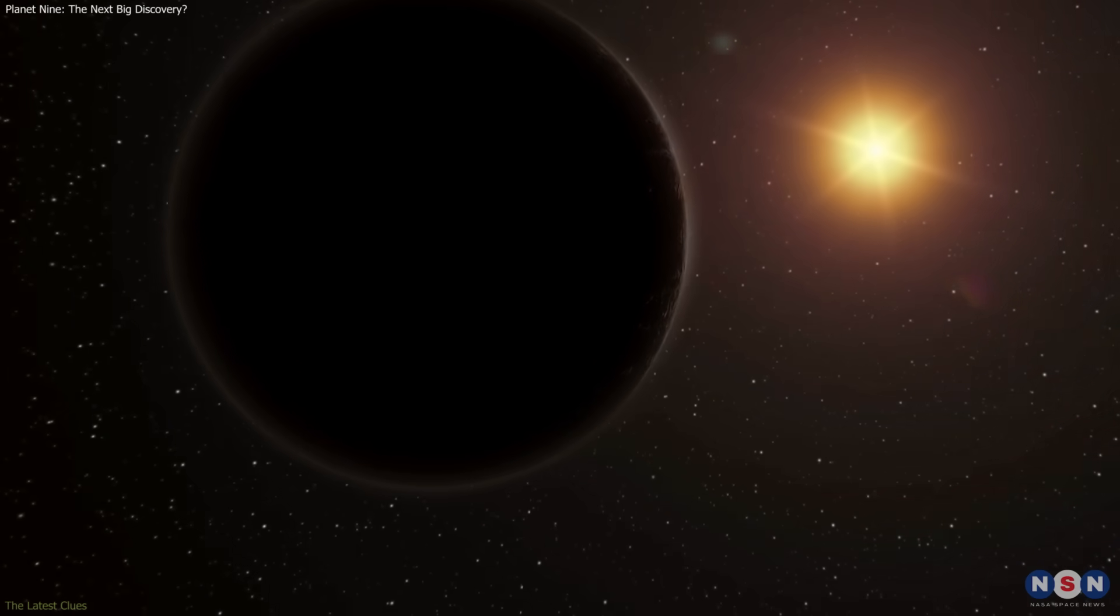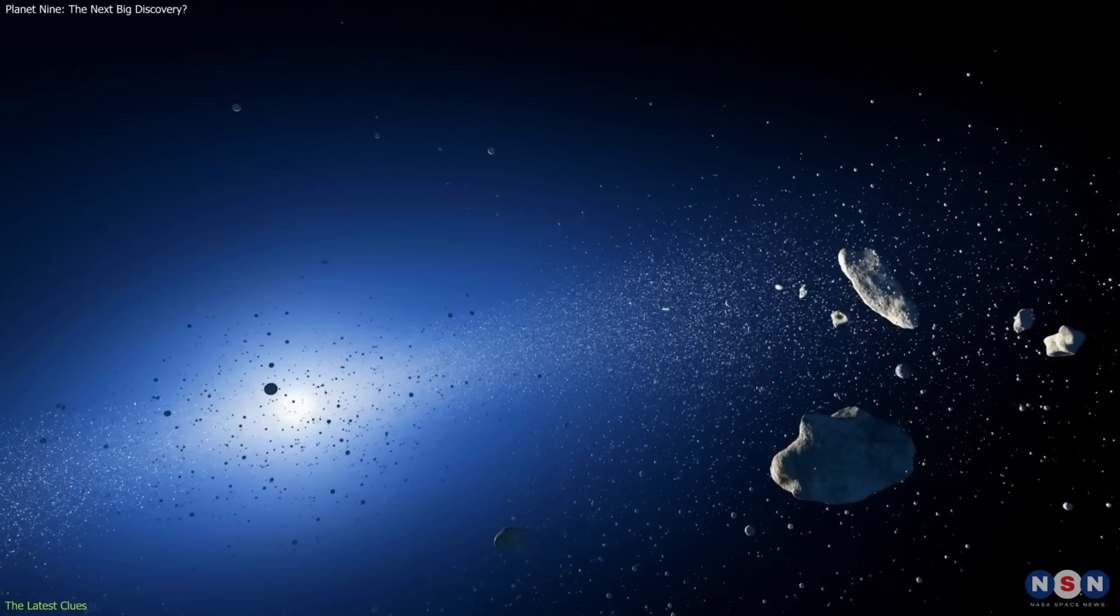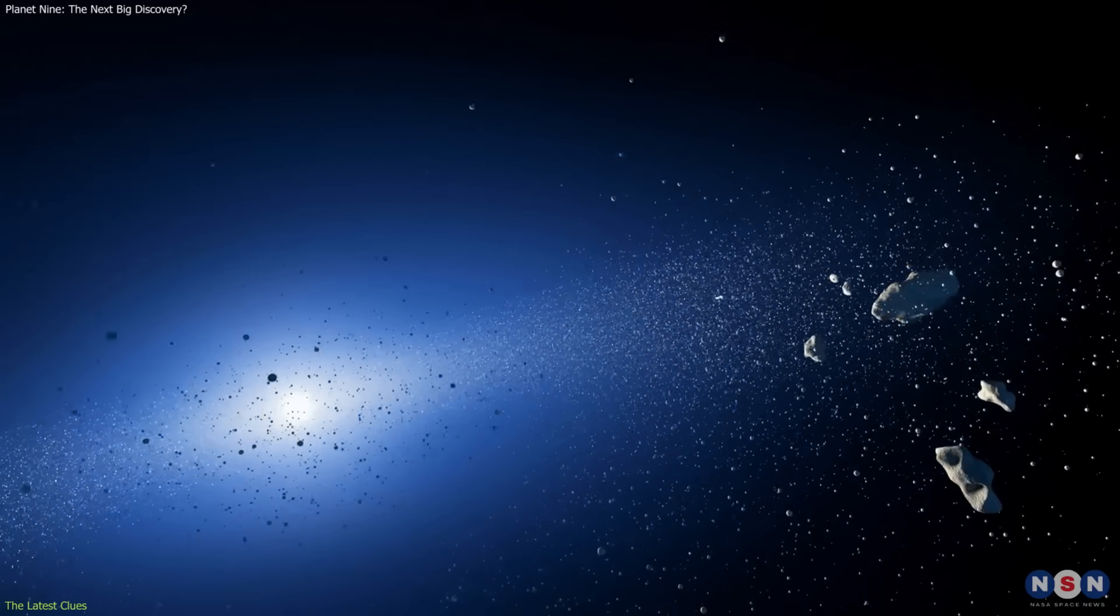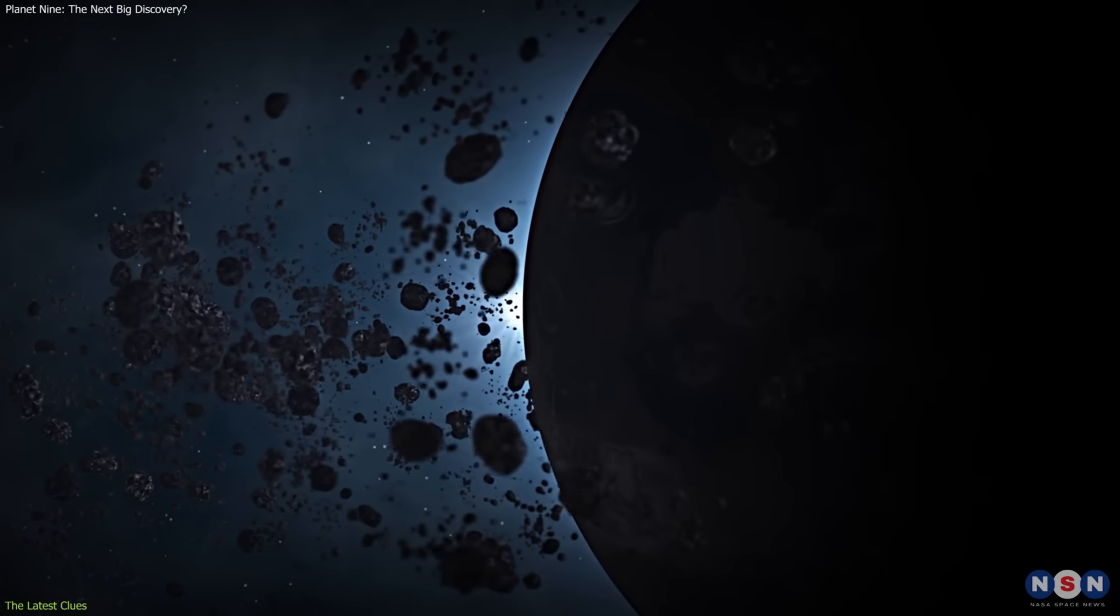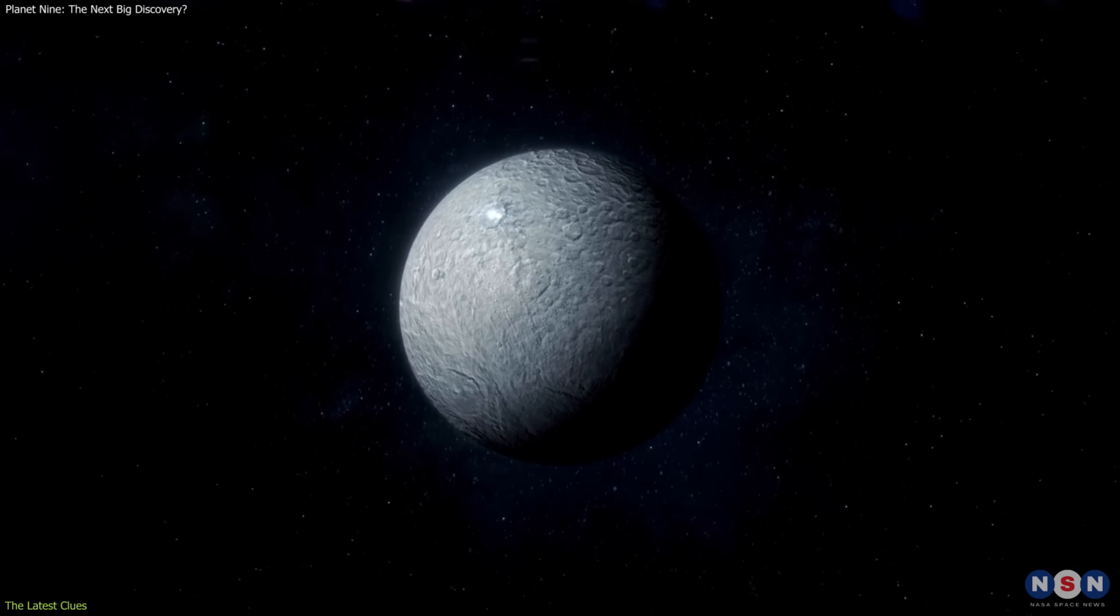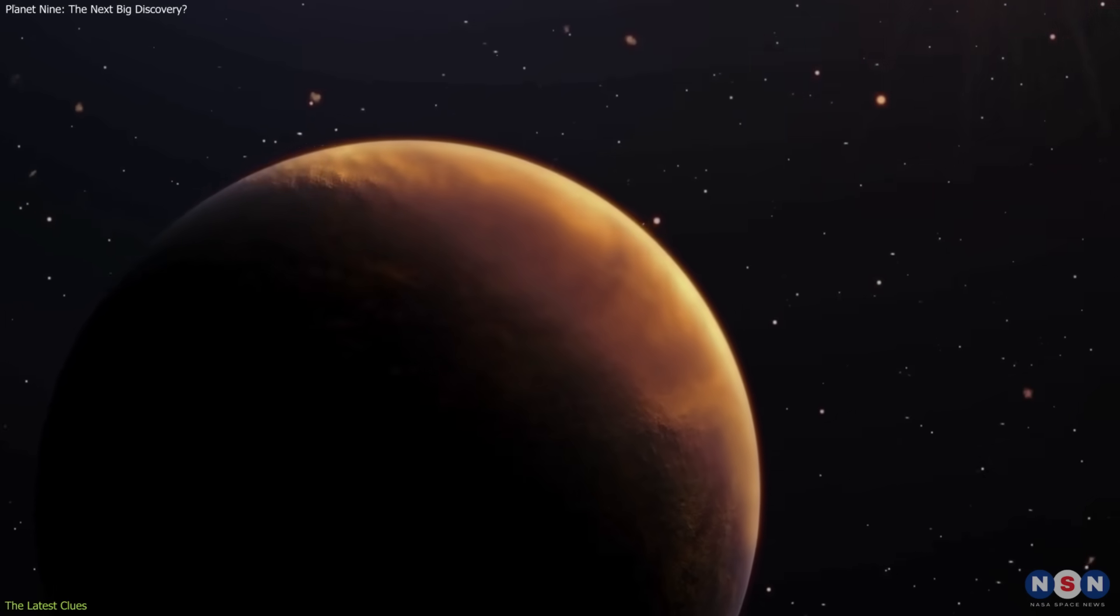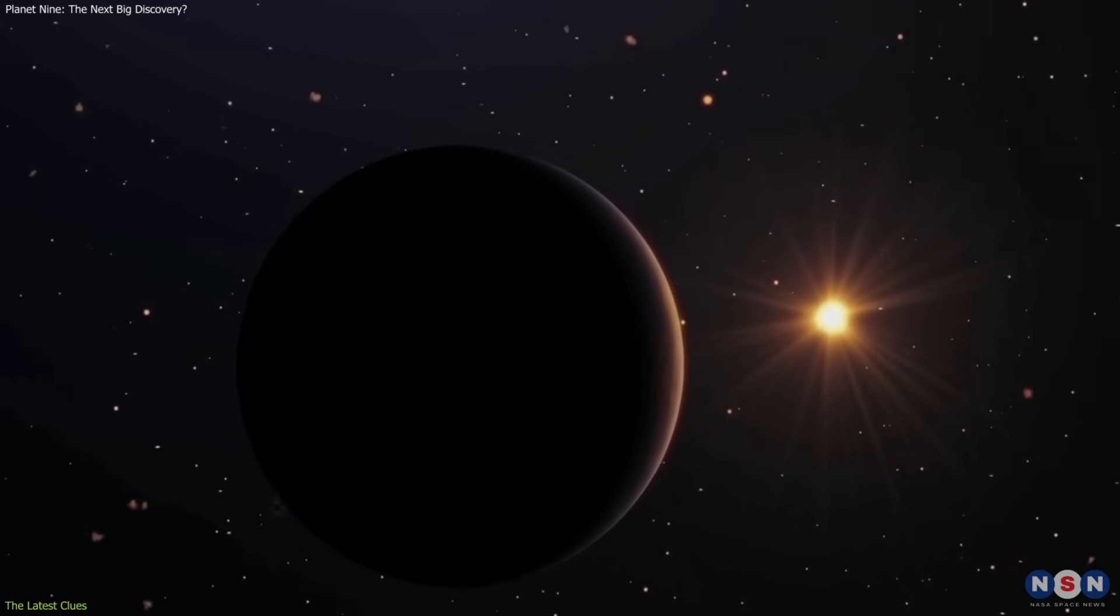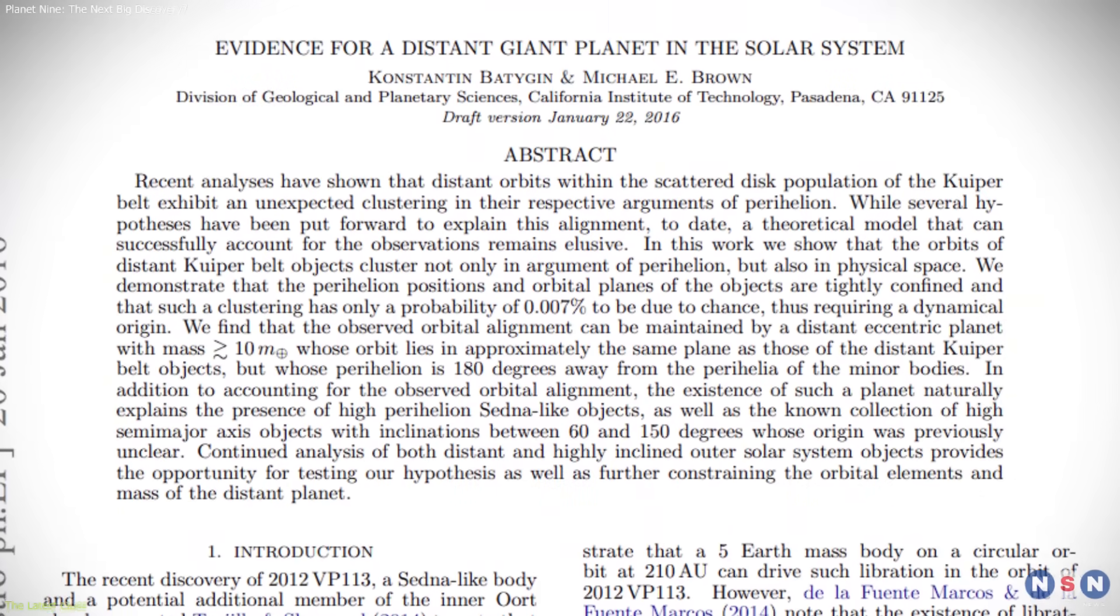The debate over Planet 9 began in earnest a decade ago when researchers noticed unusual alignments in the orbits of certain Kuiper Belt objects. The simplest explanation seemed to be the gravitational pull of an unseen planet. Simulations suggested a world five to seven times Earth's mass, orbiting so far out that it would take up to 20,000 years to circle the Sun once. The case has grown more intriguing with recent studies.